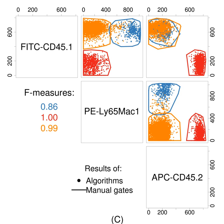Developing computational tools for identification of cell populations has been an area of active research only since 2008. Many individual clustering approaches have recently been developed, including model-based algorithms such as flowclust and flame, density-based algorithms such as flock and swift, graph-based approaches such as samspectral, and most recently hybrids of several approaches such as flowmions and flowpeaks.